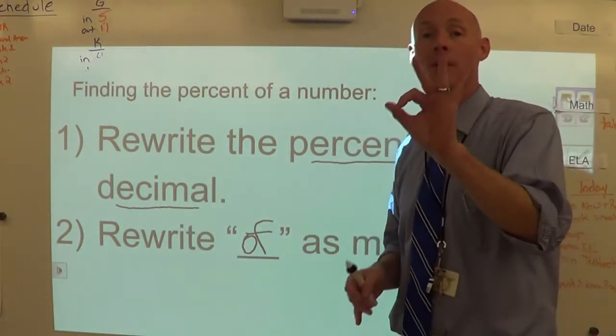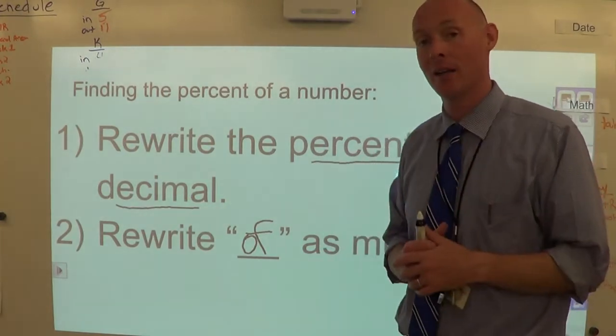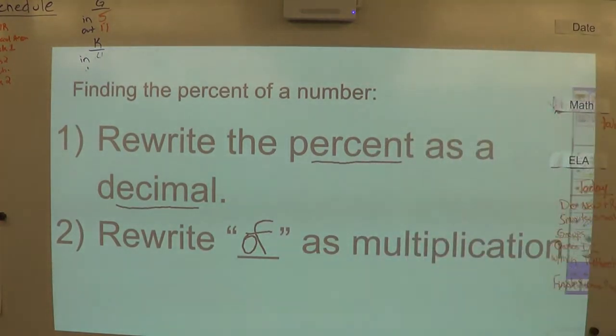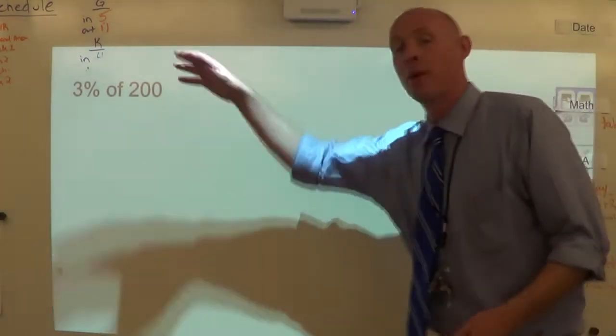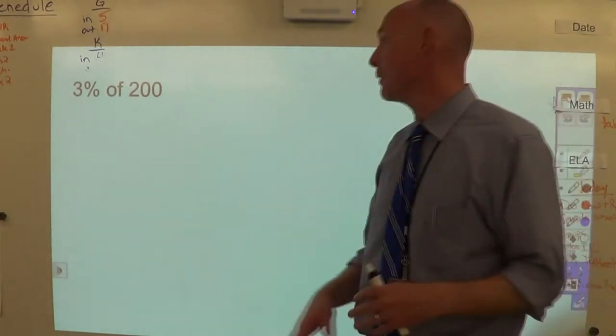This is a perfect example. What we're going to do is we're going to find 3 percent of 200. Now step one, you have to change that percent into a decimal.